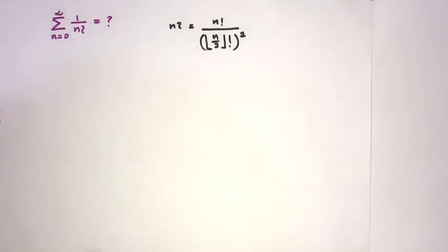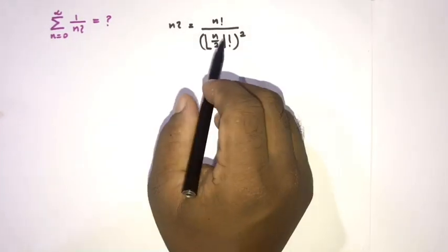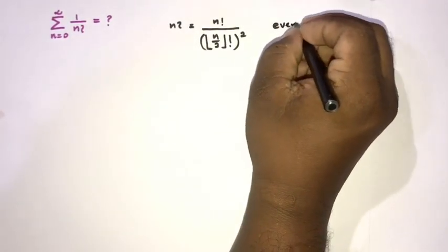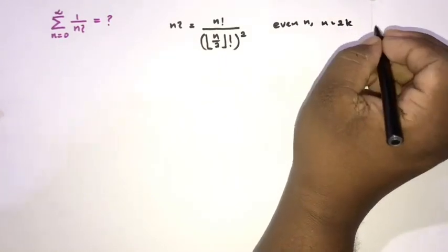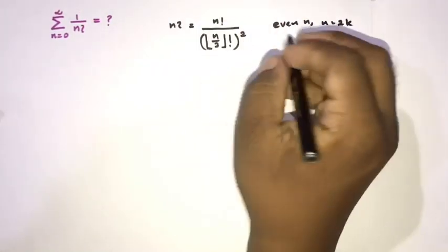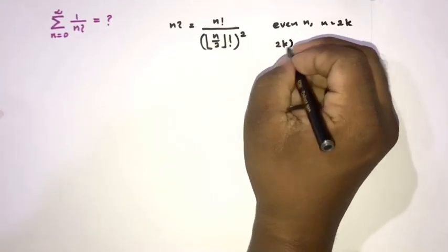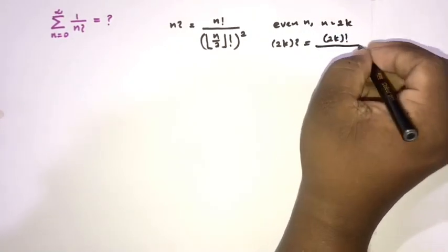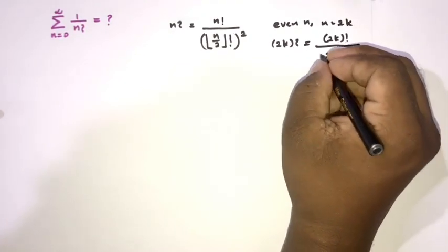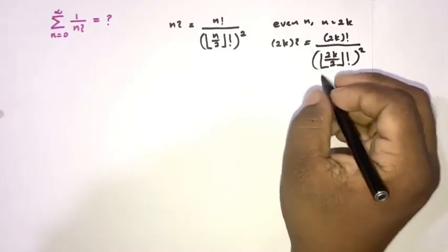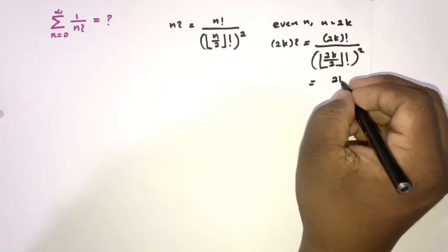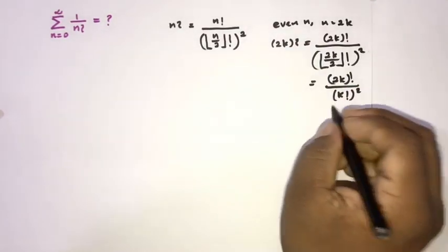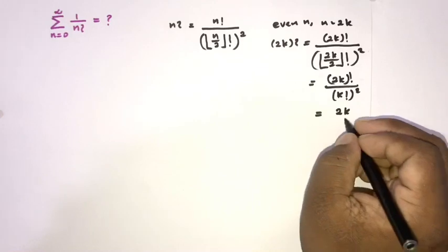Now our question involves 1 over n swinging factorial. We have floor of n over 2, so if we consider even n, taking n equal to 2k, we can write: the 2k swinging factorial equals 2k factorial over k factorial squared. And we know this is also equal to 2k choose k.